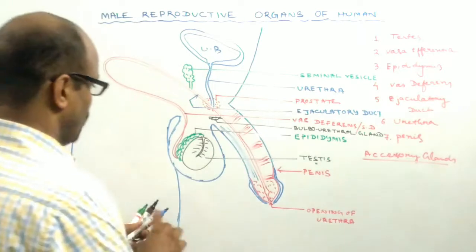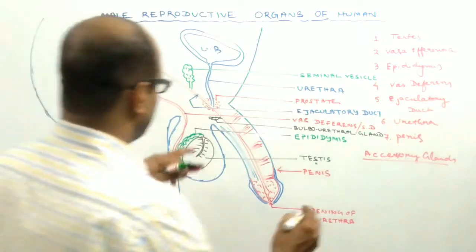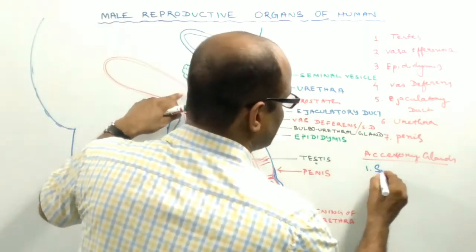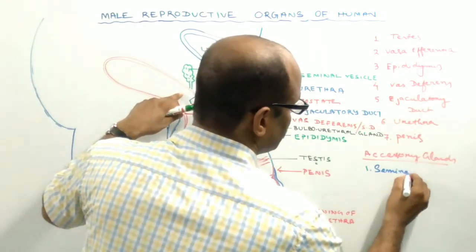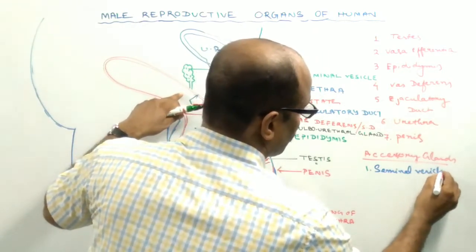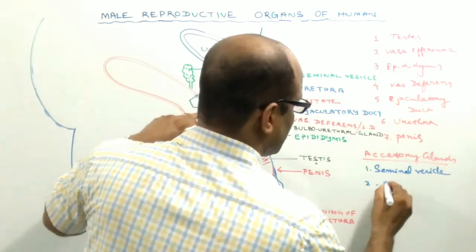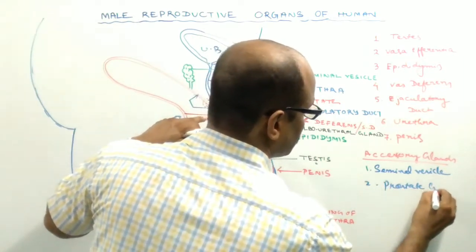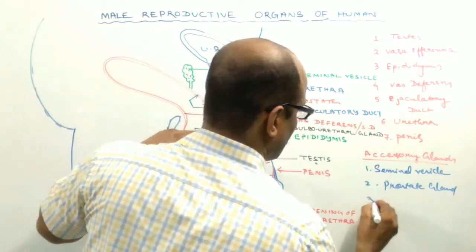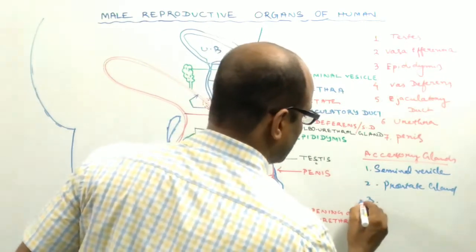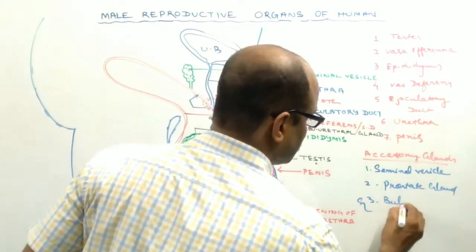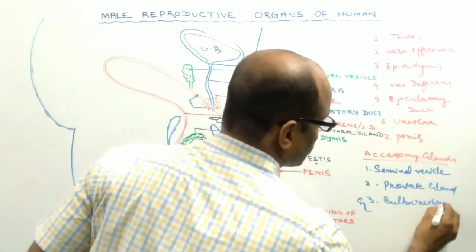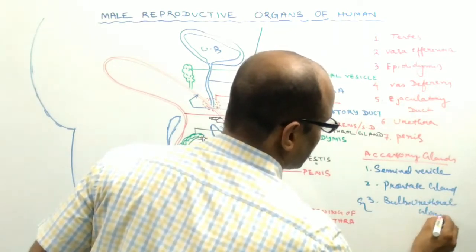The seventh one is the penis, and the accessory glands. In case of human, the accessory glands are the seminal vesicle, the prostate gland, and the bulbo-urethral gland.